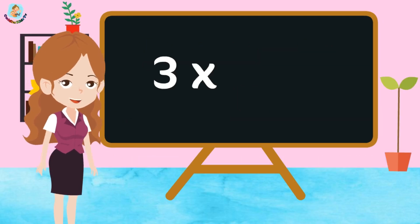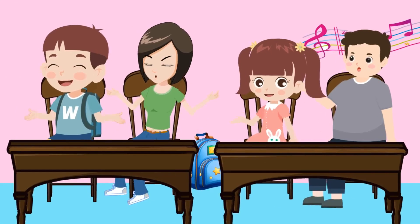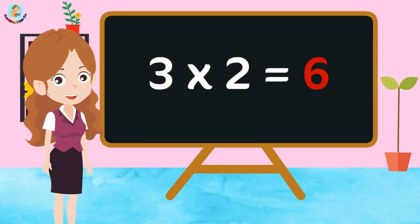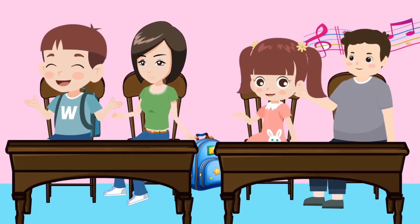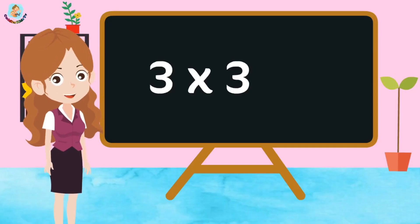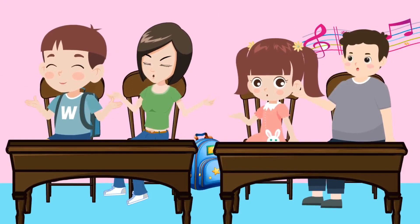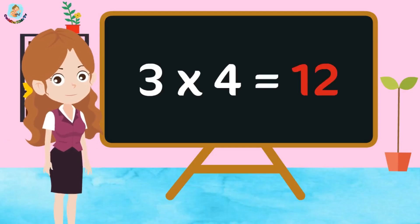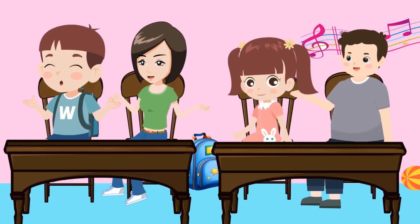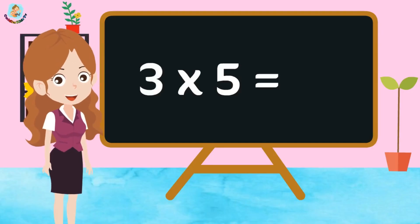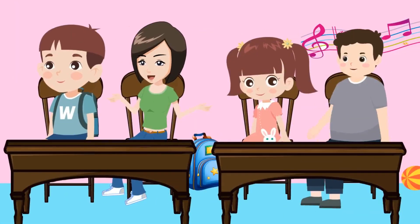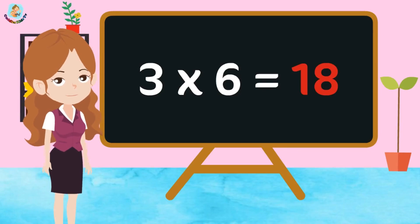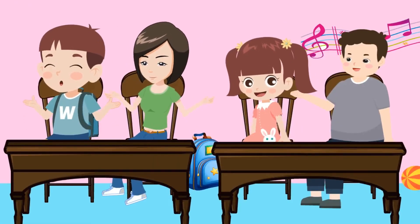3 1s are 3, 3 2s are 6, 3 3s are 9, 3 4s are 12, 3 5s are 15, 3 6s are 18.